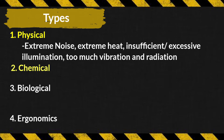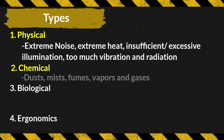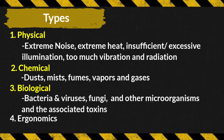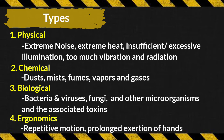Examples of chemical hazards are dust, mist, fumes, vapors, and gases. Examples of biological hazards are bacteria and viruses, fungi, and other microorganisms and their associated toxins. Examples of ergonomic hazards are repetitive motion, prolonged exertion of the hands, heavy lifting, pushing or pulling of heavy objects, and static posture.